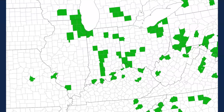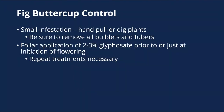Fig buttercup is mostly a northeastern Illinois problem right now, but it's good to keep an eye out for it anywhere. There are some native look-alikes, so make sure you look for those kidney-shaped leaves and many-petaled flowers, and confirm positive ID before starting control. For small infestations, hand pull or dig the plants and be sure to remove all the bulblets and tubers since that's how it persists and spreads. Foliar applications of glyphosate just before or right at the point of flowering seem to work, but it's a hard plant to kill and will require repeat treatments.